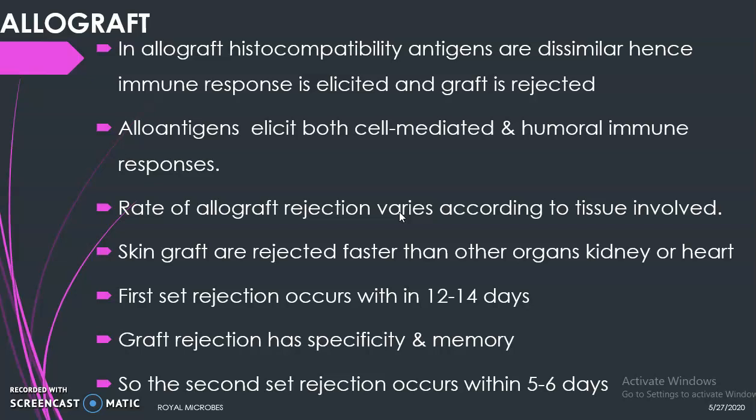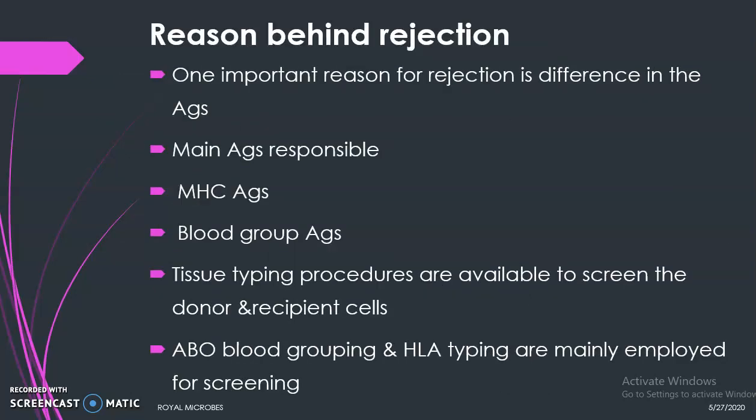The rate of allograft rejection varies according to the tissues involved. We have already seen in the previous class that skin grafts are more easily and more quickly rejected than organ grafts. We have already covered first set rejection, second set rejection, graft rejection specificity, and immunological memory in the previous class.